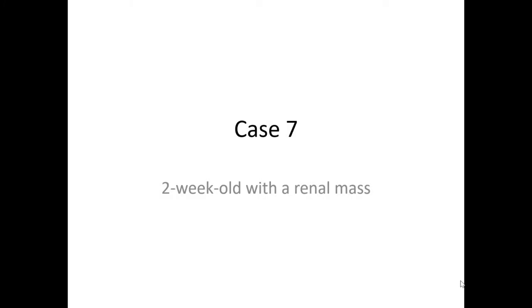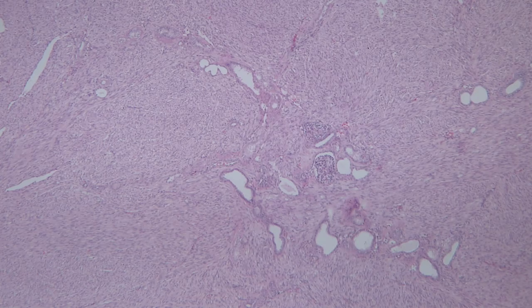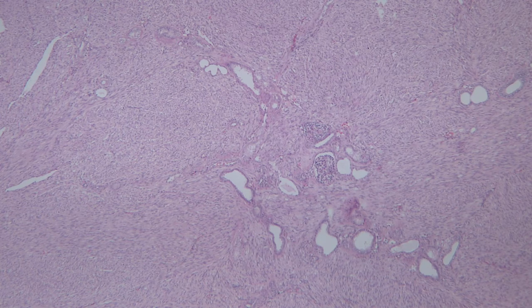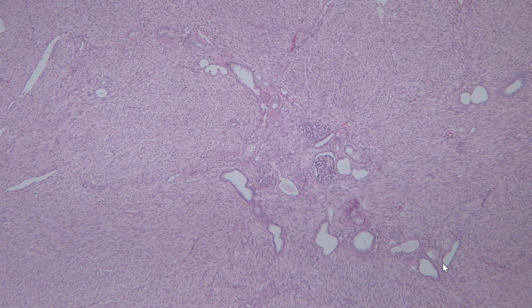This is case 7, a two-week-old with a renal mass. Low-power examination of the tumor failed to show any good interface between the tumor and normal kidney. Instead, what you can see are tubules and glomeruli entrapped within the tumor, consistent with an infiltrative process.